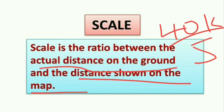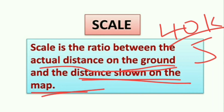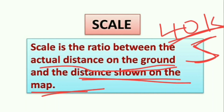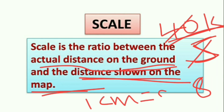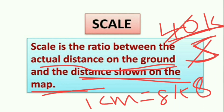The scale is the ratio between the actual distance on the ground and the distance shown on the map. Here the actual distance is 40 kilometers and on the map it is shown as 5 centimeters, so 40 divided by 5 equals 8. Therefore the scale is 1 centimeter equals 8 kilometers. If we know the scale, we can calculate the distance between any two places on the map.